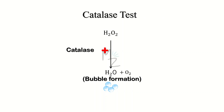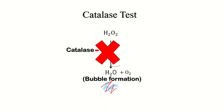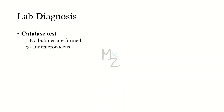In the catalase test, any bacterium that releases catalase enzyme will convert hydrogen peroxide into water and oxygen, producing bubbles. When there is no catalase, hydrogen peroxide is not converted and no bubbles form. This test is negative for enterococcus — no bubbles are formed.